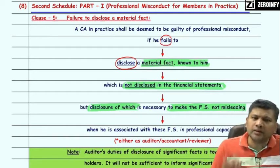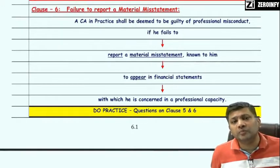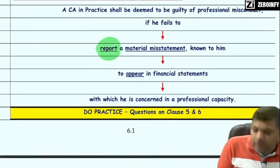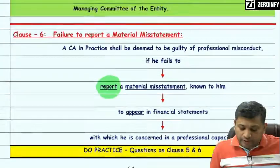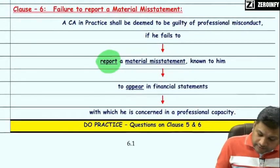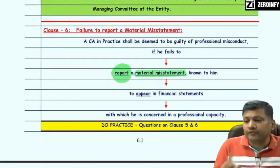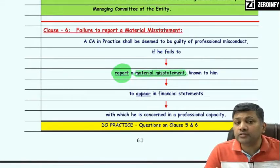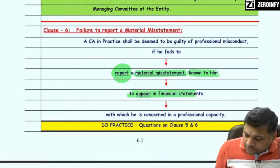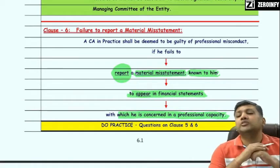Clause 6 similarly provides that a practicing CA shall be deemed to be guilty of professional misconduct if he fails to report a material misstatement. The word used in Clause 5 is 'disclose' whereas Clause 6 uses the word 'report.' Clause 6 states: if he fails to report a material misstatement known to him to appear in financial statements with which he is concerned in a professional capacity.